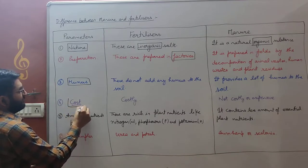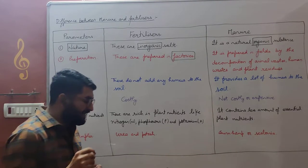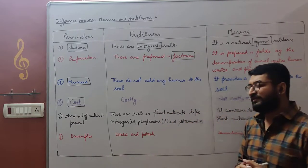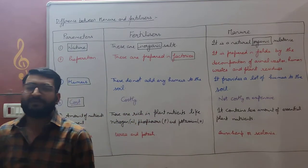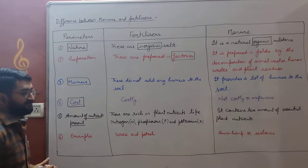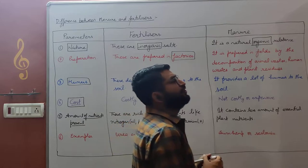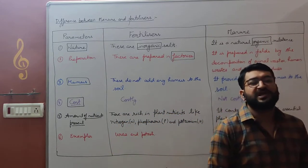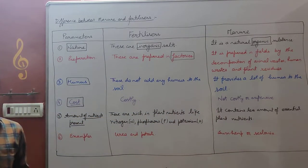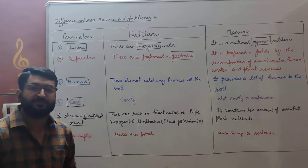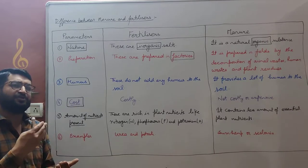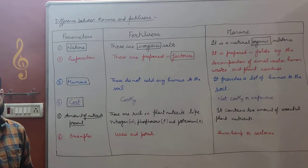The next parameter is cost. Fertilizers are costly, whereas manures are inexpensive, cheap, and economical — everybody can easily afford them. Next, amount of nutrients present. Fertilizers are rich in specific nutrients: nitrogenous fertilizers are rich in nitrogen, phosphatic fertilizers in phosphorus, potassium fertilizers in potassium, and complex fertilizers are rich in more than one kind of nutrient like nitrogen and phosphorus together.